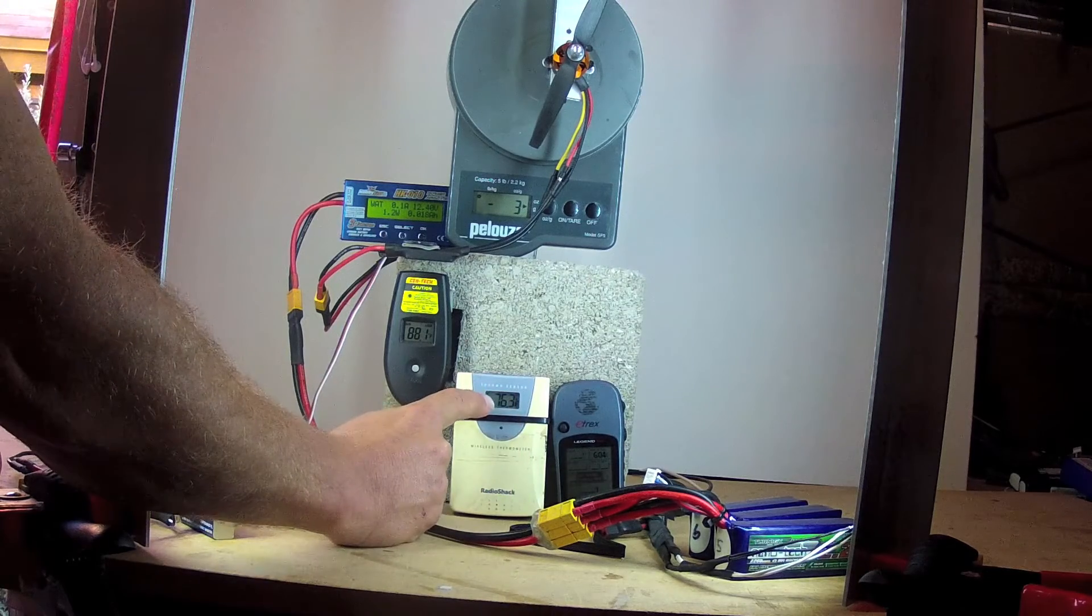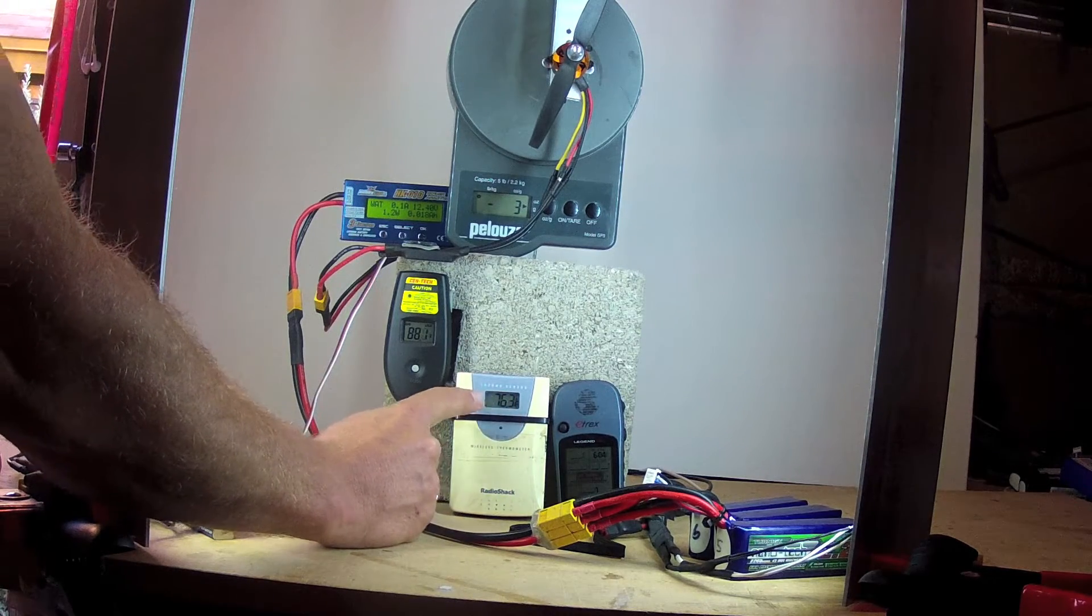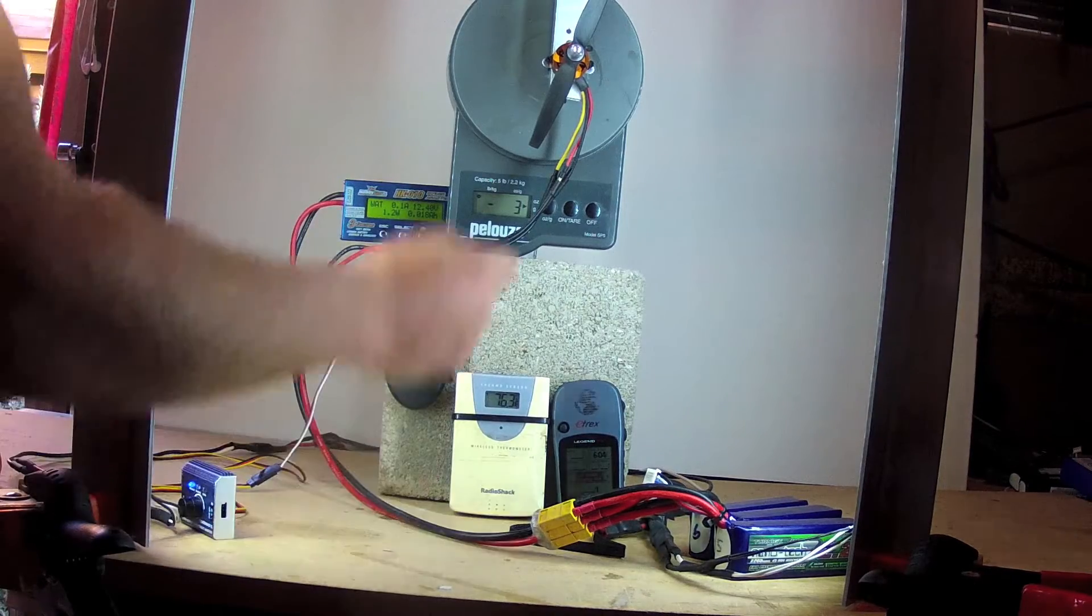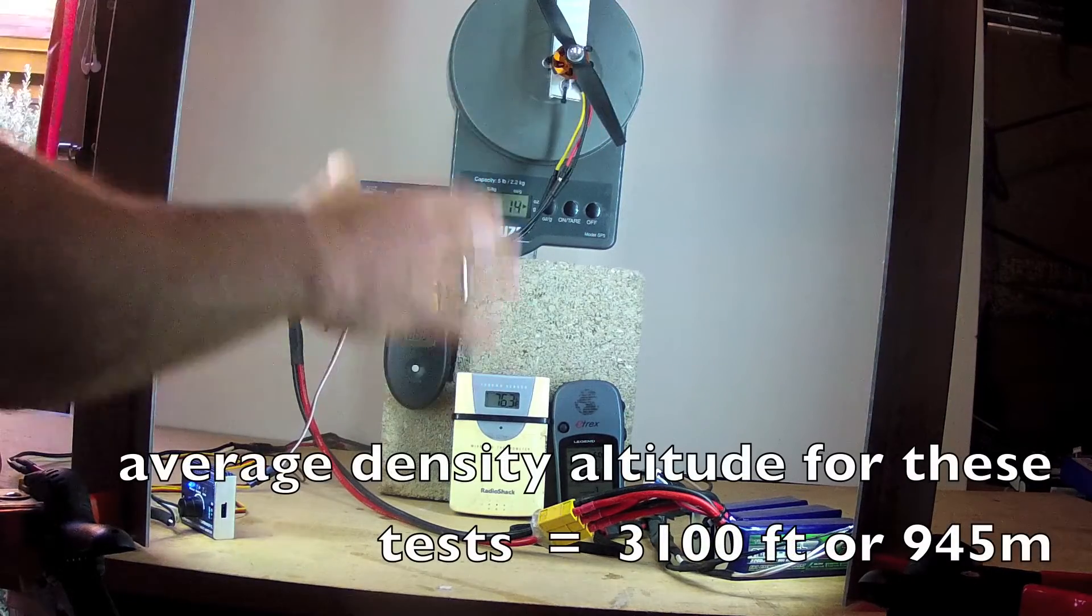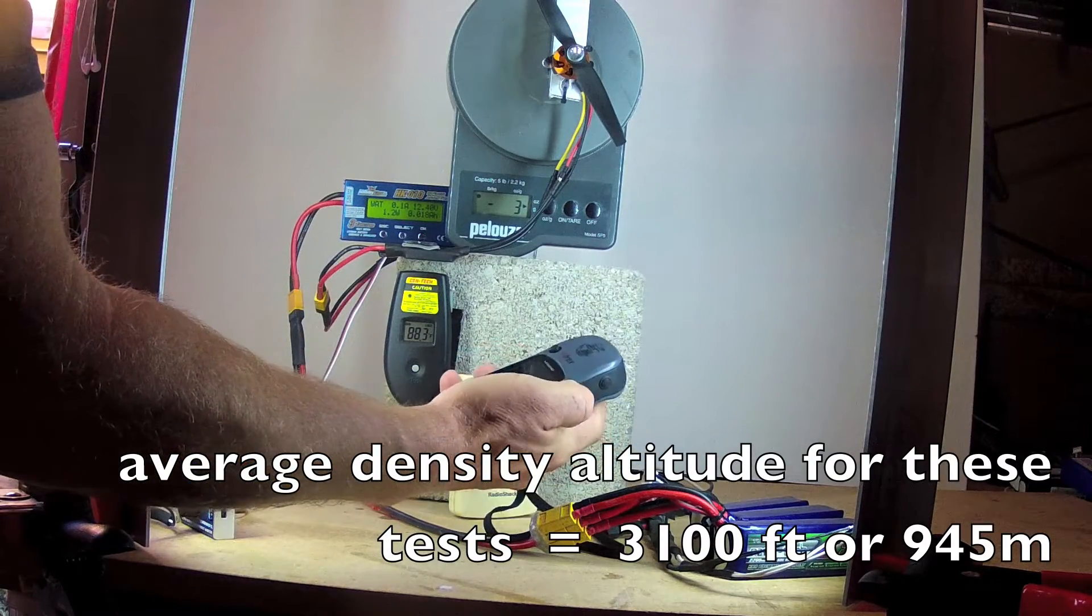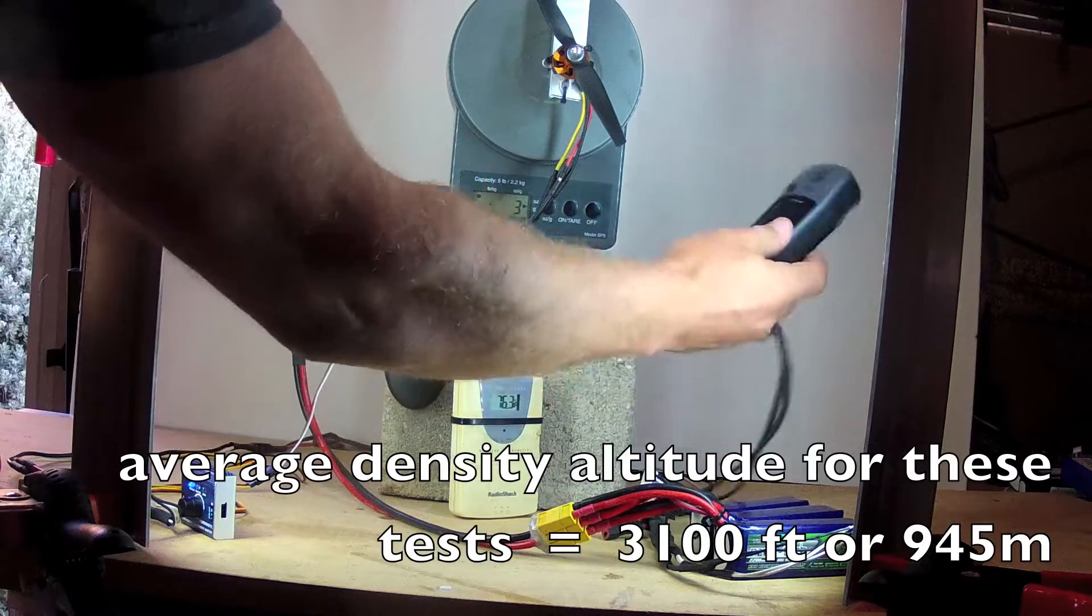Here's a simple digital thermometer just to display the ambient temperature for a determination of density altitude here so I can give you a comparison of what thrust you might expect if you live at higher or lower elevations than I do in Phoenix, Arizona which is 1550 feet as measured by this GPS.